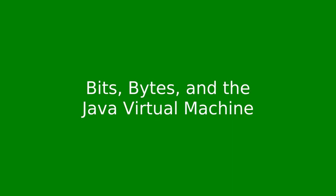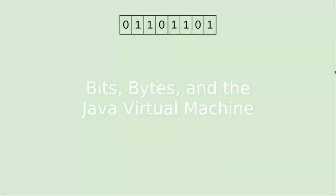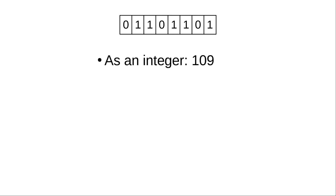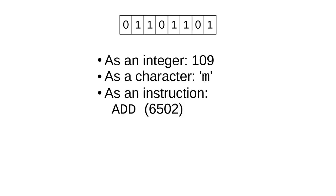Let's talk a little more about bits and bytes. A byte is 8 bits, or binary digits. Here's a byte in binary. If we interpret it as an integer, it's the number 109. If we interpret it as an encoded character, it's the lowercase letter M. If we interpret those bits as a programming instruction on a 6502 processor, it's the instruction to add two numbers. This last part is important — each pattern of bits is a different instruction to the CPU. This is called the CPU's instruction set.